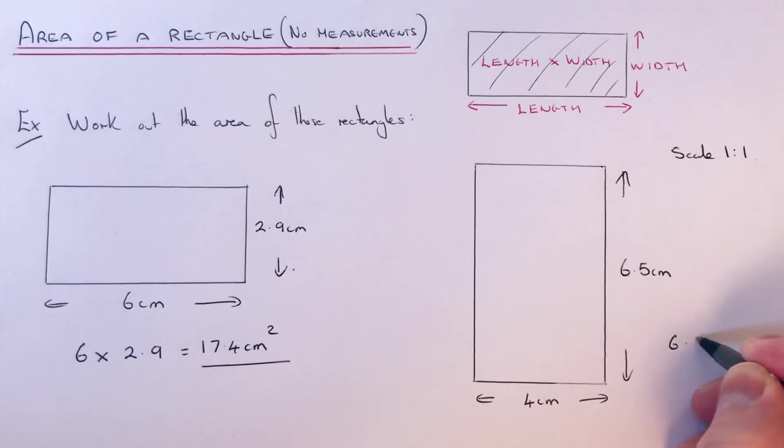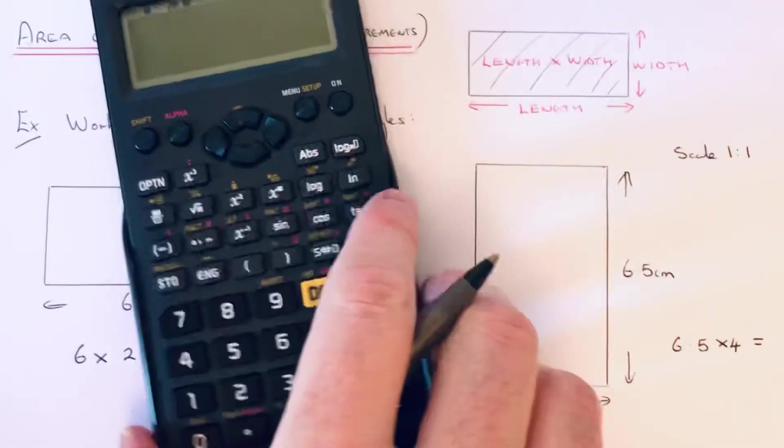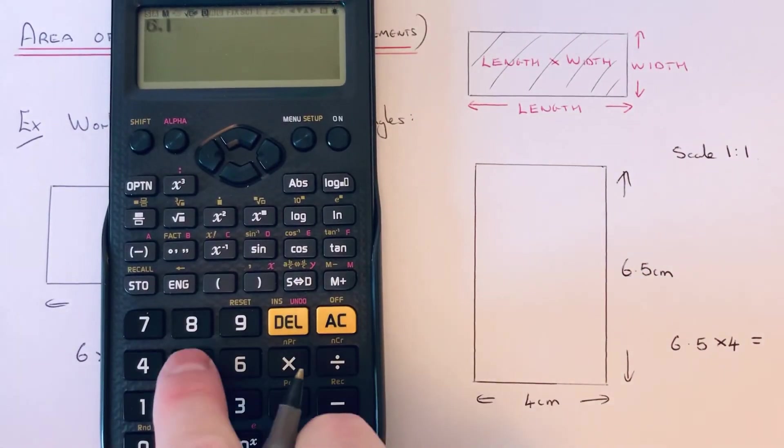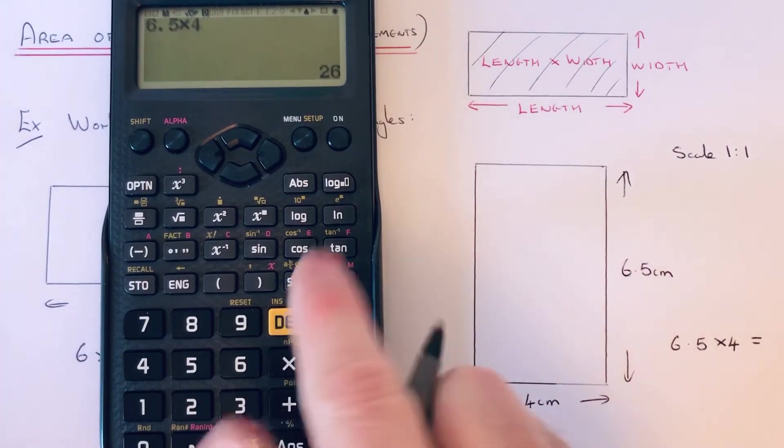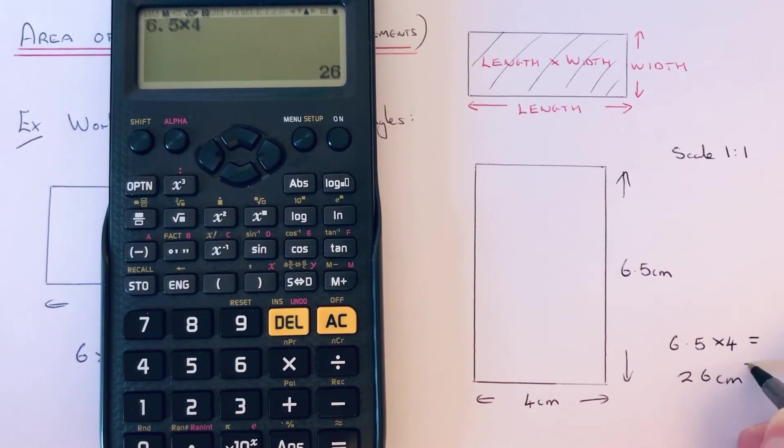So we just need to multiply these two measurements together, so 6.5 times 4. That gives an answer of 26 centimeters squared.